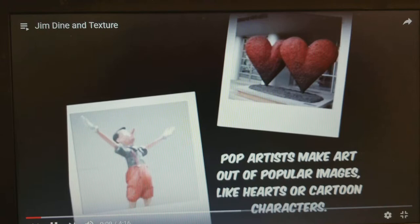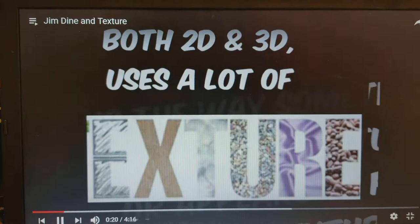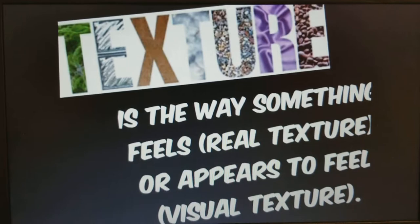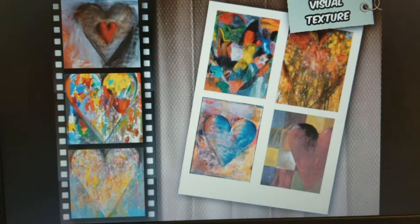Jim Dine is considered a pop artist, though he doesn't think he is. There are lots and lots of texture in his work. Texture is the way something feels or the way it looks like it feels. His hearts look like they feel all kinds of different ways — smooth, bumpy, rough, hard, soft.